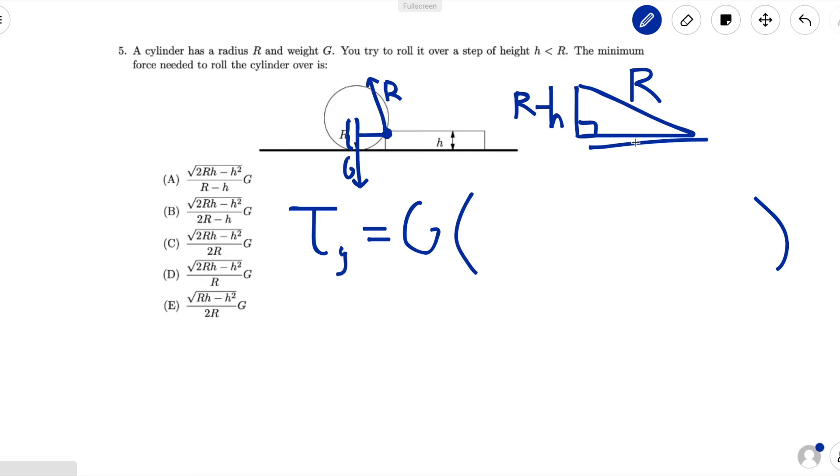So we can use the Pythagorean theorem to find the leg of this triangle, which is the square root of r squared minus (r minus h) squared, and that's equivalent to square root of 2rh minus h squared. So now we've got our torque due to gravity.